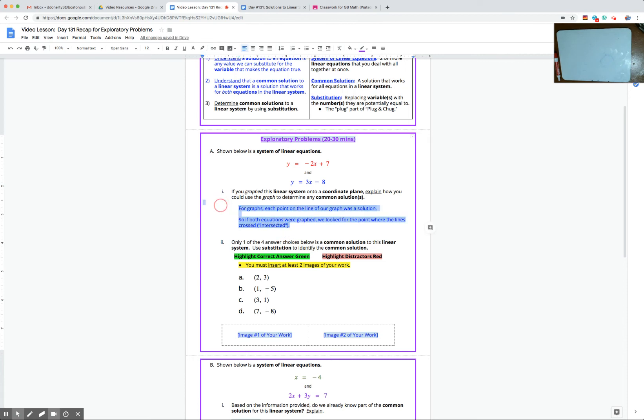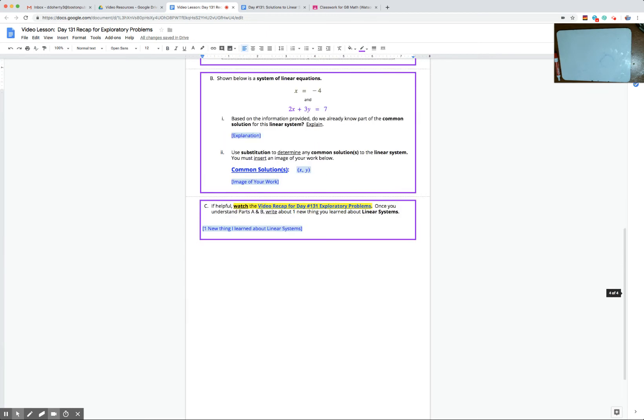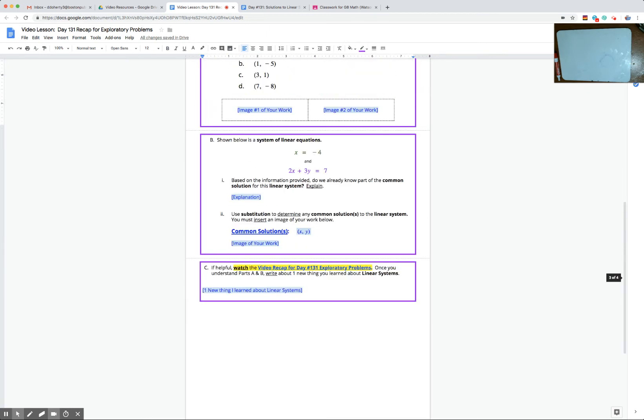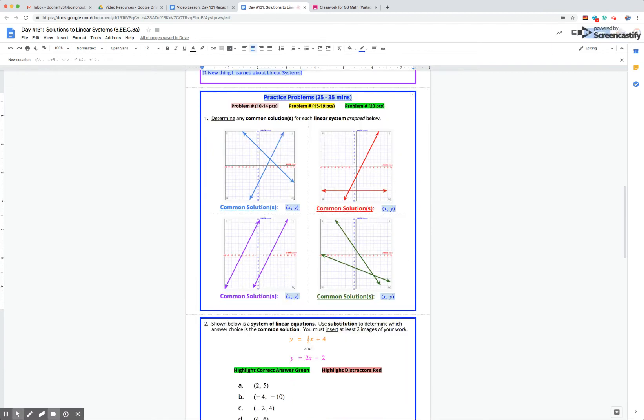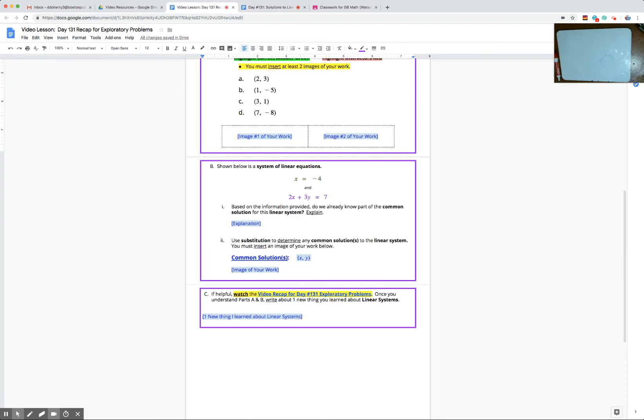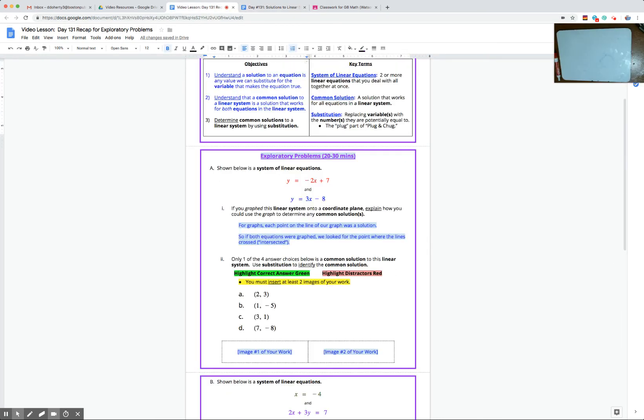So this is going to show up today when you're working through problem number one in the practice problems. Problem one in the practice problems is going to have you finding common solutions based on a graph. That was work that we did the last couple days and hopefully is part of today getting going. You said, well, if we had a graph here, we could have just looked to see where the lines intersect. Instead of having a graph, though, we're just provided with two equations today.